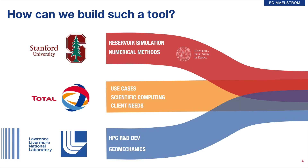And last, we have Total. Total brings use cases. We know what the target applications will look like. We have a good understanding for how scientific computing resources are deployed in production environments, and we understand what our clients, our affiliates, and our partners in the domain need as far as functionalities and interfaces. We started this joint project in 2018, and we expect it to last until 2023.